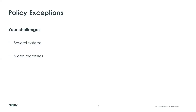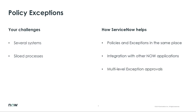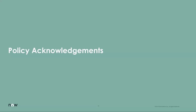Different teams in an organization have siloed processes and tools to manage exceptions. With the policy exception management capability, we provide a centralized place for managing policies and exceptions. You can also create exceptions from other Now applications such as vulnerability response, change management, incident management, and problem management, allowing you to manage all policies and exceptions in one central place. The policy exception module supports dynamic approval based on various conditions and multi-level policy approvals. We also provide the ability to tie in risk assessments and bring in risk information for better review and approval.